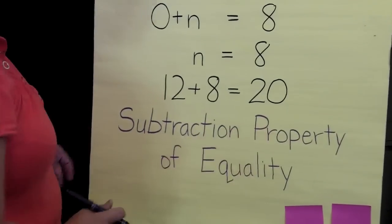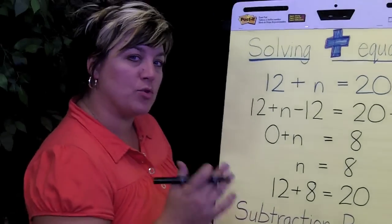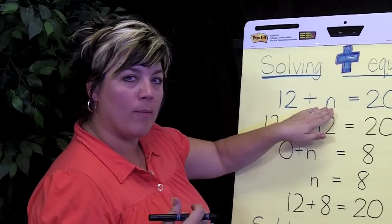So this was the subtraction property of equality. That when I have an addition equation, I'm going to use subtraction from both sides to help me get my variable all by itself.